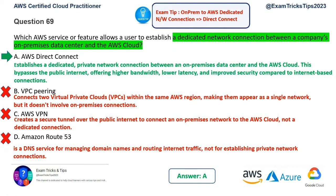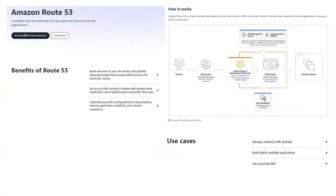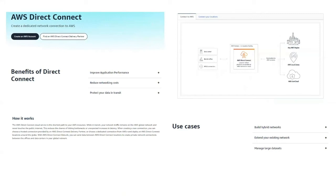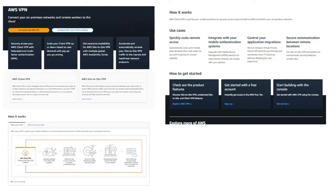Reference documentation: Amazon Route 53 is a reliable and cost-effective way to route end users to internet applications — it's your DNS service. VPC peering documentation explains how VPC peering connections work. AWS Direct Connect documentation covers how it creates a dedicated network connection to AWS, its benefits and how it works — an important topic for this exam and for SA or further certifications. AWS VPN is also covered; go through its use cases. Option A, AWS Direct Connect, is the correct answer.